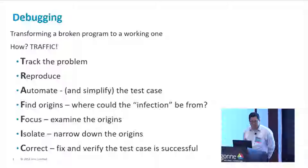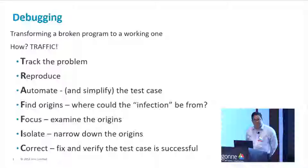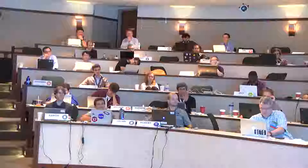You want to find the problem and try to focus on where it's coming from. Sometimes bugs are not easy to find — you can spend days or weeks just trying to figure out what's going on. One thing you can do is rubber duck debugging. The idea is that you talk through the problem with somebody, whether they're an expert or not, going through the code line by line. Often in explaining what the code is supposed to do, you'll find a mistake — like where did that minus sign come from?